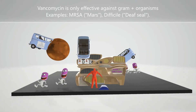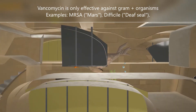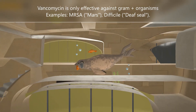Another organism vancomycin is effective against is Clostridium difficile. Inside the club there's one member who didn't leave — the deaf seal. The deaf seal represents 'difficile.' Difficile is one of the organisms which vancomycin is very effective against.